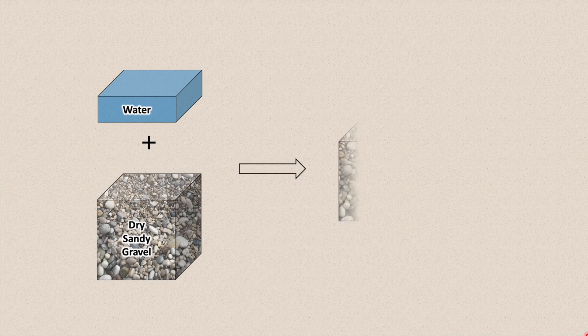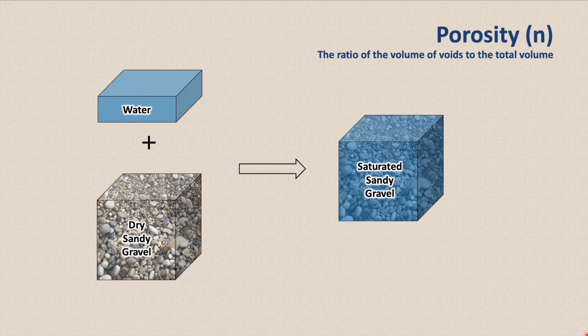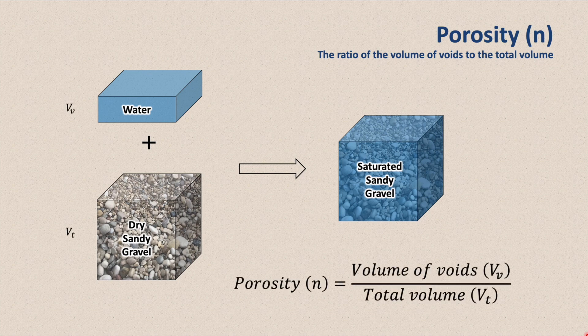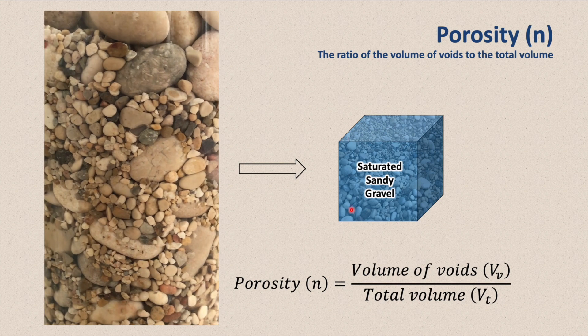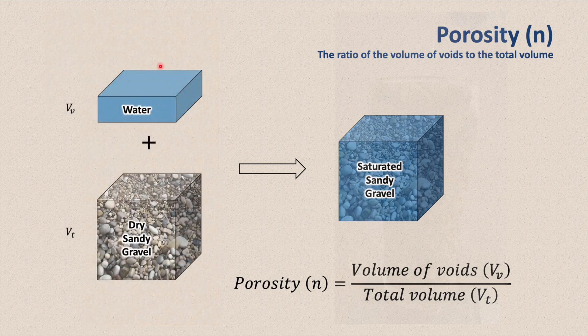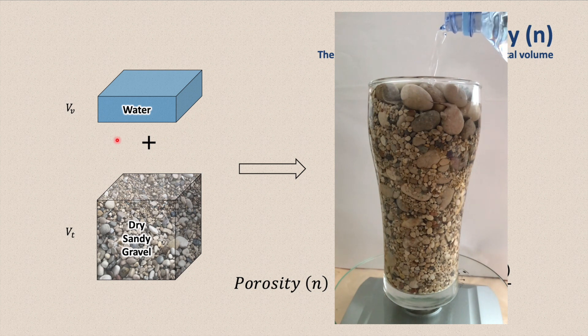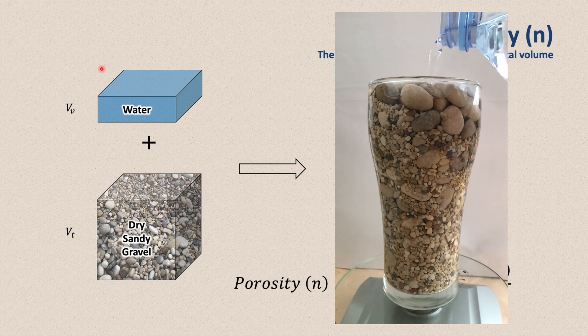If we have a cubic meter of dry sandy gravel, we can calculate its porosity by measuring how much water we need to fully saturate it. Porosity is the ratio of the volume of voids to the total volume. It is represented as little n and it is calculated by dividing the volume of voids by the total volume. We can calculate our porosity simply by dividing the volume of water by the volume of our sample.